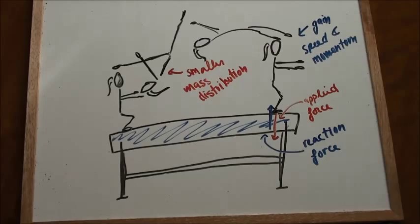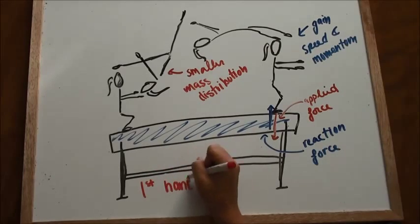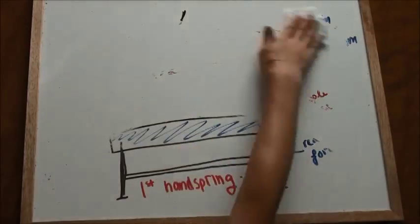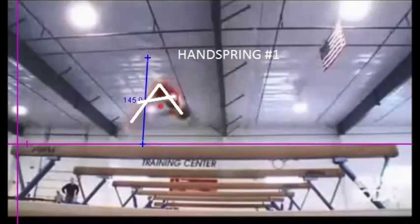In her second back handspring, she keeps both legs together the entire time, instead of bringing them both together at the end. This keeps the distribution of mass closer to the axis of rotation, giving her more momentum and allowing her to land the handspring 0.2 seconds earlier than the first flip.